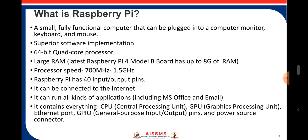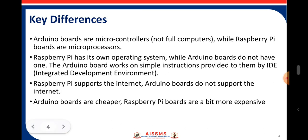What is Raspberry Pi? It is a small, fully functional mini-computer that can be plugged into a computer monitor, keyboard, and mouse. It has superior software implementation and a 64-bit quad-core processor. It has a large RAM, and processor speed ranges from 700 MHz to 1.5 GHz. It has 40 input and output pins, can connect to the internet, and can run all kinds of applications including MS Office and email. It contains CPU, GPU, Ethernet port, GPIO pins, and a power source connector.